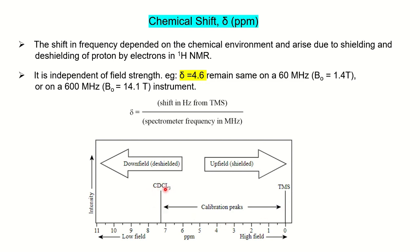One example shown is CDCl3 (chloroform), with the shift from TMS indicated, giving a chemical shift value of 7.3 ppm. The shift is measured in hertz. In the proton NMR scale, values run from 0 to 11 ppm. If the chemical shift value is decreasing, that is called an upfield shift, meaning the proton is shielded. If the chemical shift value is increasing, that is a downfield shift, meaning the protons are deshielded.